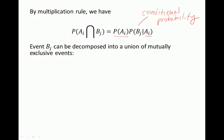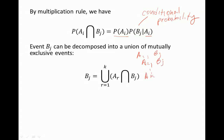For the denominator, event Bj can be decomposed into a union of mutually exclusive events. Bj is a union of all possible first-stage outcomes combined with Bj in the second stage. So how could Bj happen? We could have a1 then Bj, or a2 then Bj, all the way up to ak then Bj.